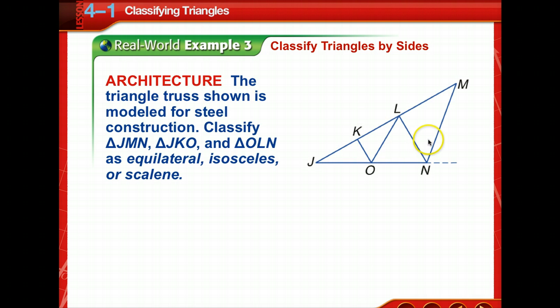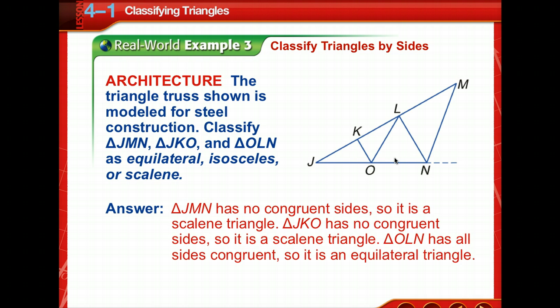Now, this one I'm not really happy with because they didn't put hash marks on this figure, so I'll help you identify those. The triangle truss shown is modeled for steel construction. Classify triangle JMN, and I will tell you it is scalene. None of the sides are the same, which it wouldn't have been marked anyway because it's scalene. And JKO is also scalene, and OLN is equilateral. They're telling me that OL and LN have the same measure. So, knowing that, we can say OLN is the same measure as OL and LN, so it is an equilateral triangle. It would have been better if they had marked it, like they said they were going to, with hash marks.